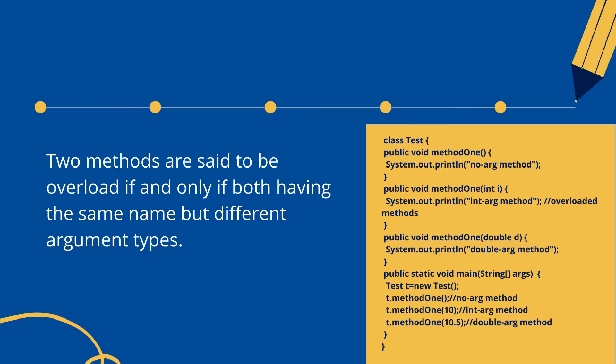Two methods are said to be overloaded if and only if both have the same name but different argument types. In this example, I have created a test class with three methods. Method one takes no argument, method two takes an int argument, and method three takes a double argument. If I create an object of this class — test t = new test() — and call a method, the program will automatically identify which method I'm trying to call.